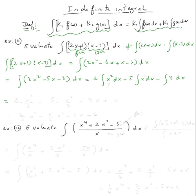Now applying the power rule for integrals: 2 times x to the three over three, minus 5 times x squared over two, minus — remember the integral of a constant 3 is just 3x — and then plus C. We can rewrite this as two-thirds x cubed minus five-halves x squared minus 3x plus C.